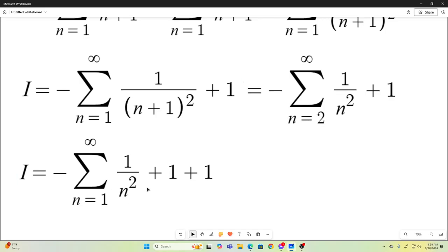So instead of starting it at 2, we're starting it at 1. But that means we need to add another 1 because the n is equal to 1 term is 1, we're subtracting it. So, if we get rid of it, we need to add it back.